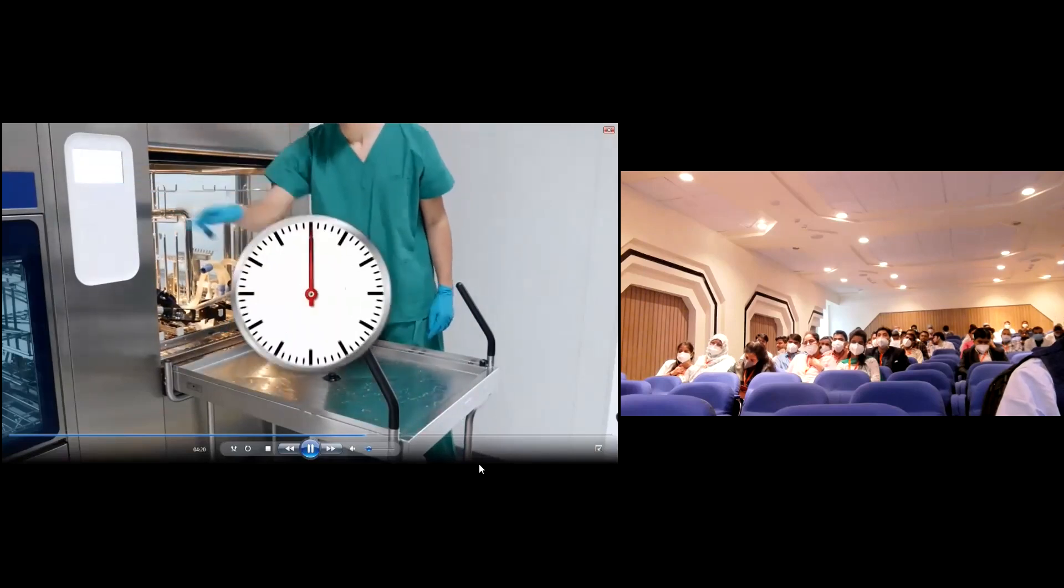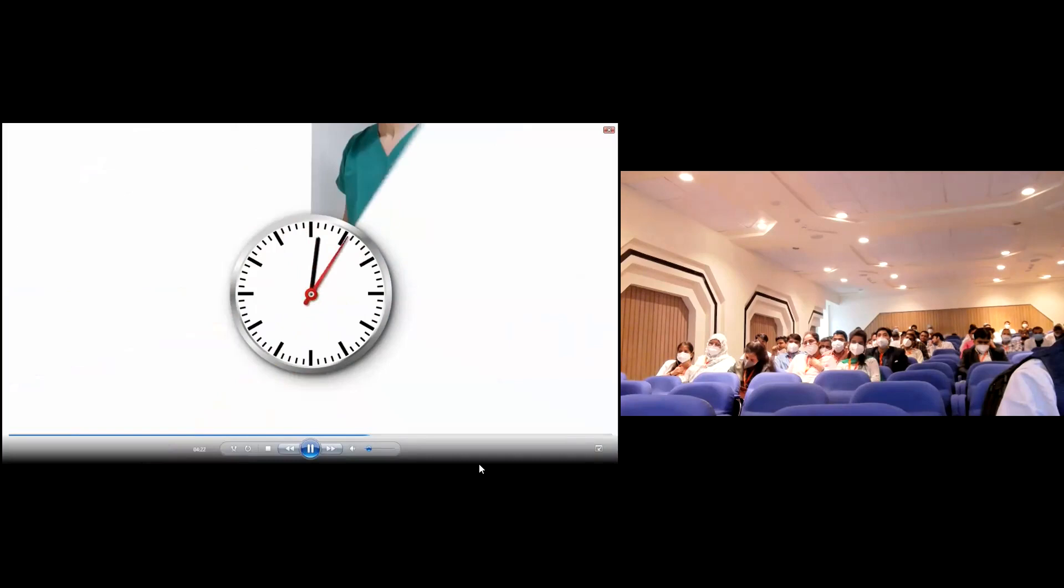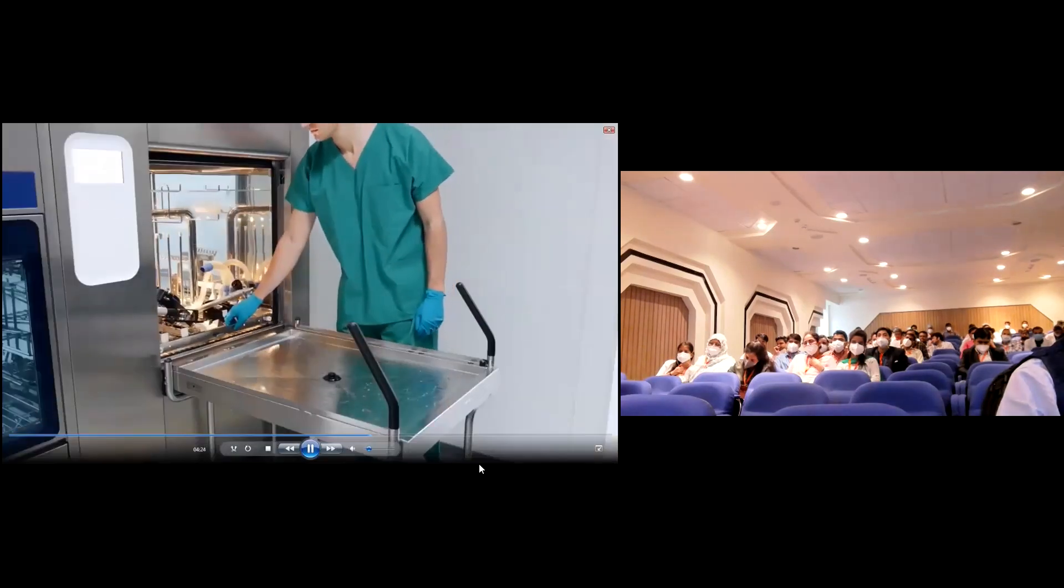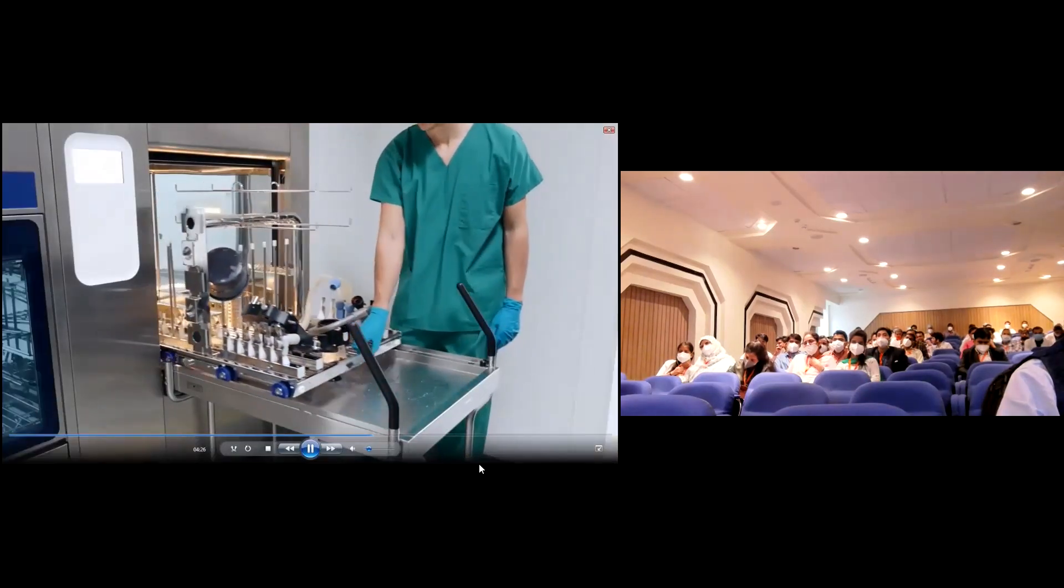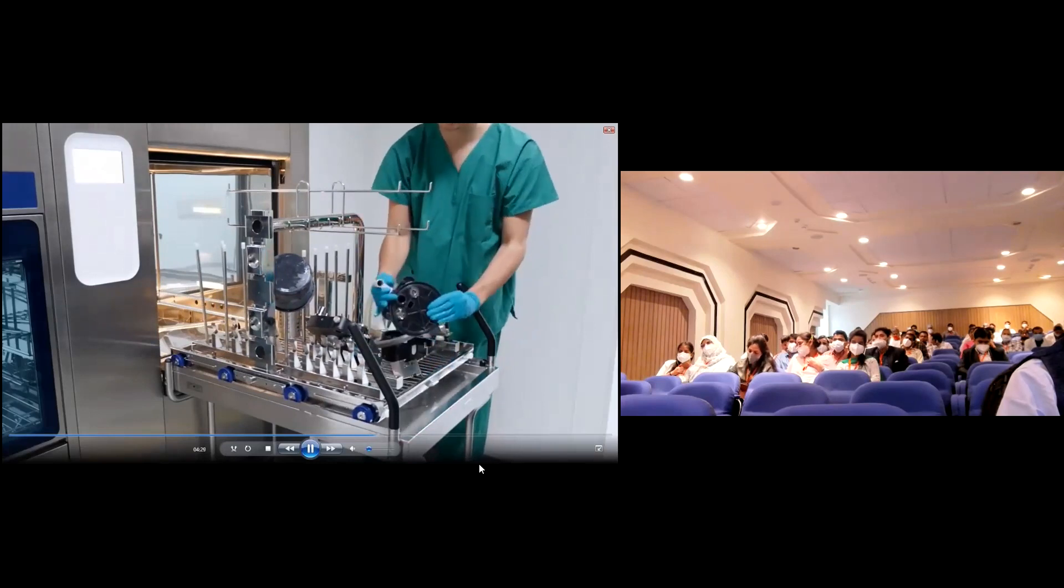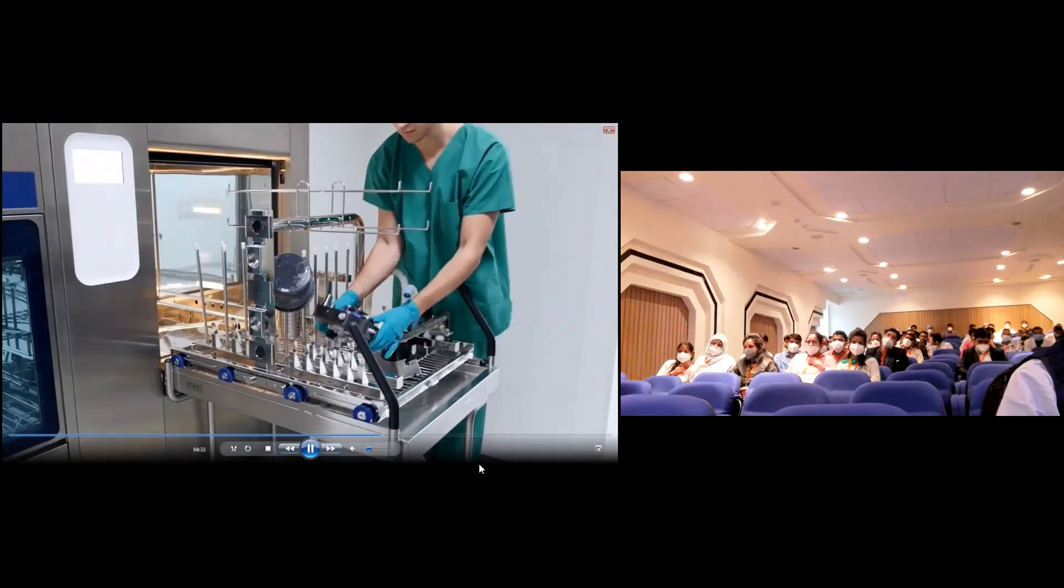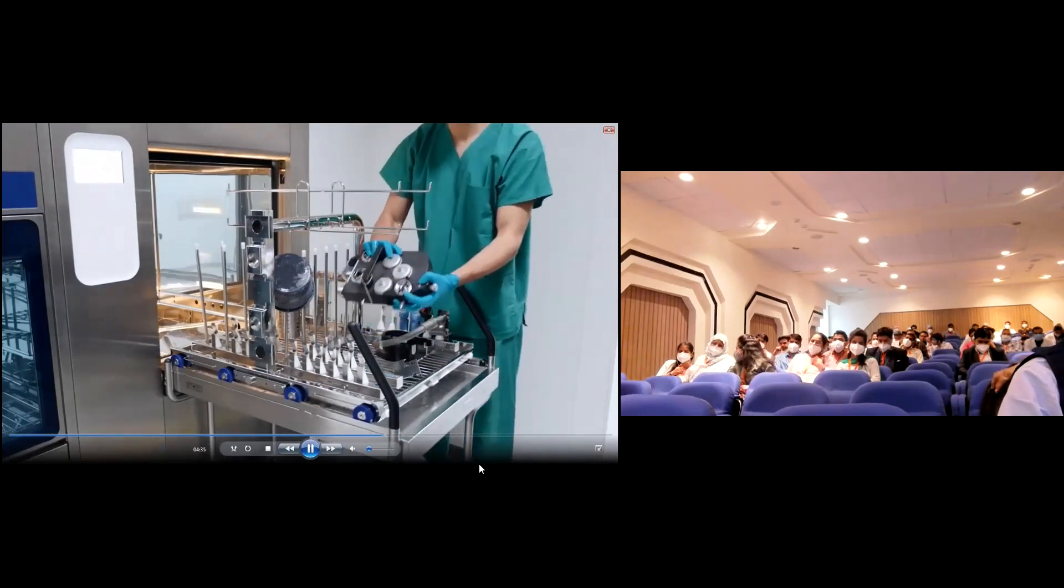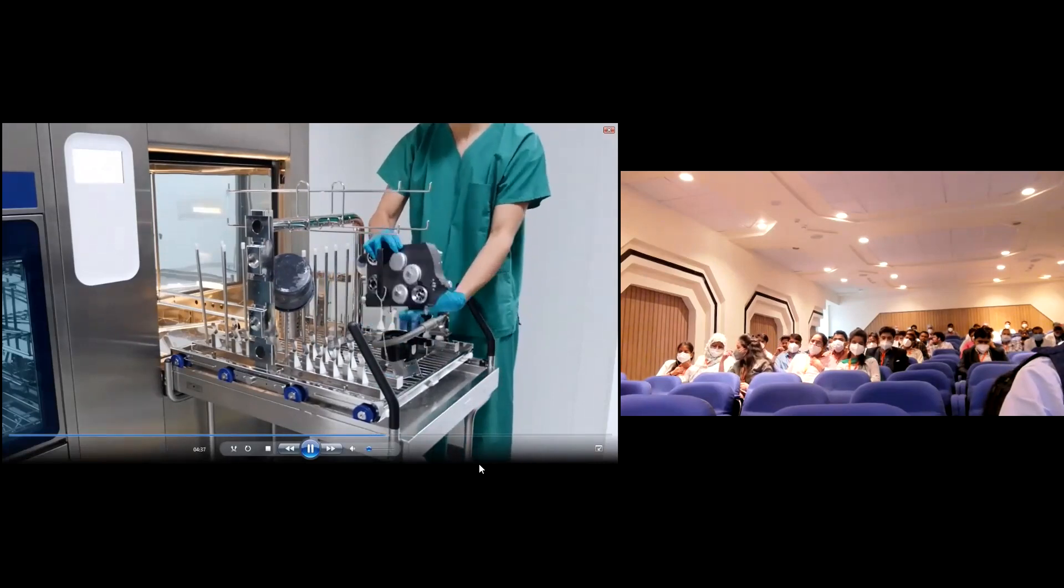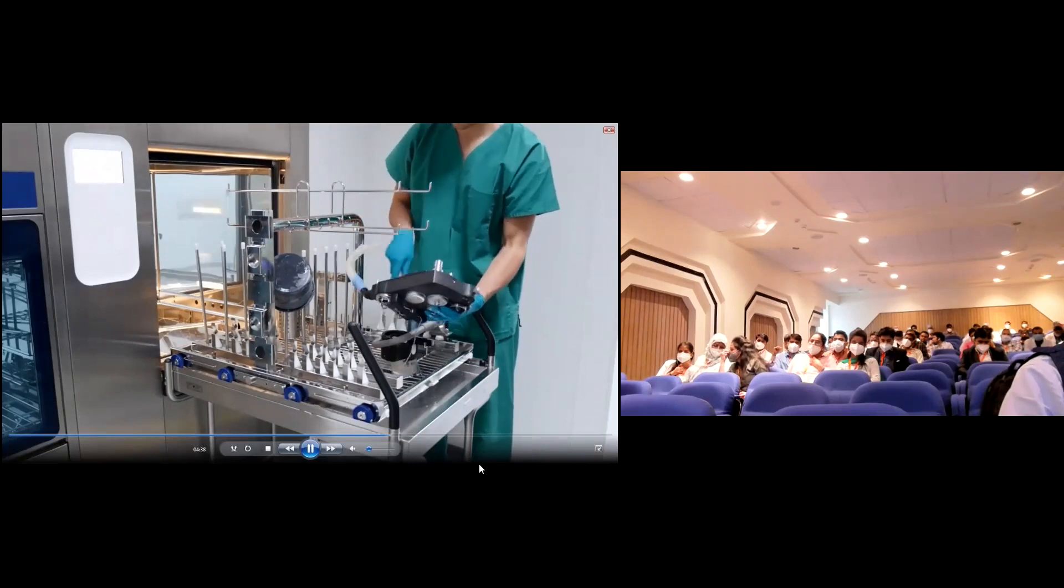Start the washer disinfector using a suitable program, preferably an anesthesia program. After completion of the cleaning and disinfection program, remove the parts from the washer disinfector and inspect them for visible soiling and damage. If necessary, repeat the program or clean manually. Finally, shake out any retaining water and allow the parts to dry thoroughly.